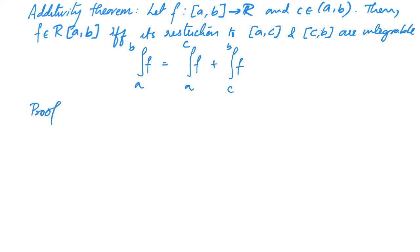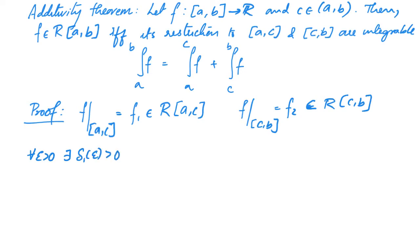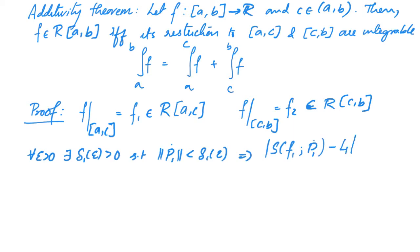Let's see a proof. Let's give some names. f restricted to [a,c] we call f1, and f1 belongs to R[a,c]. f restricted to [c,b] we call f2, and f2 belongs to R[c,b]. Because f1 belongs to R[a,c], for every ε > 0 there exists some δ₁(ε) > 0 such that ‖P₁·‖ < δ₁(ε) implies |S(f1, P₁·) − L₁| < ε for some number L₁.